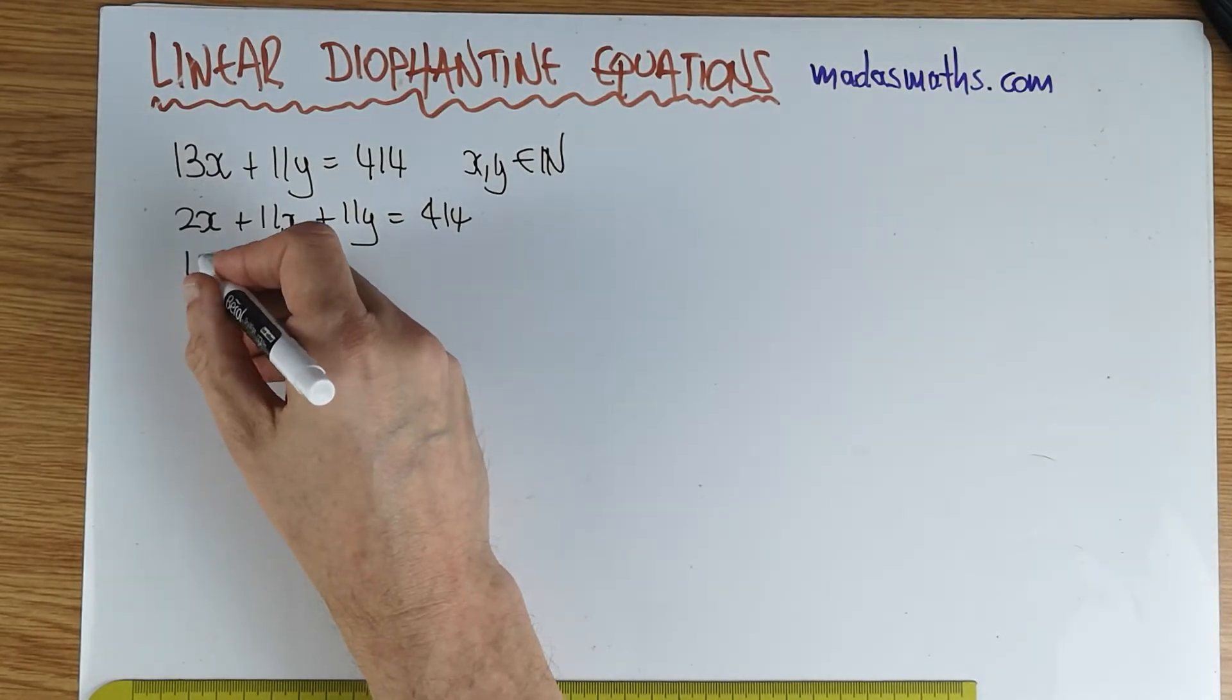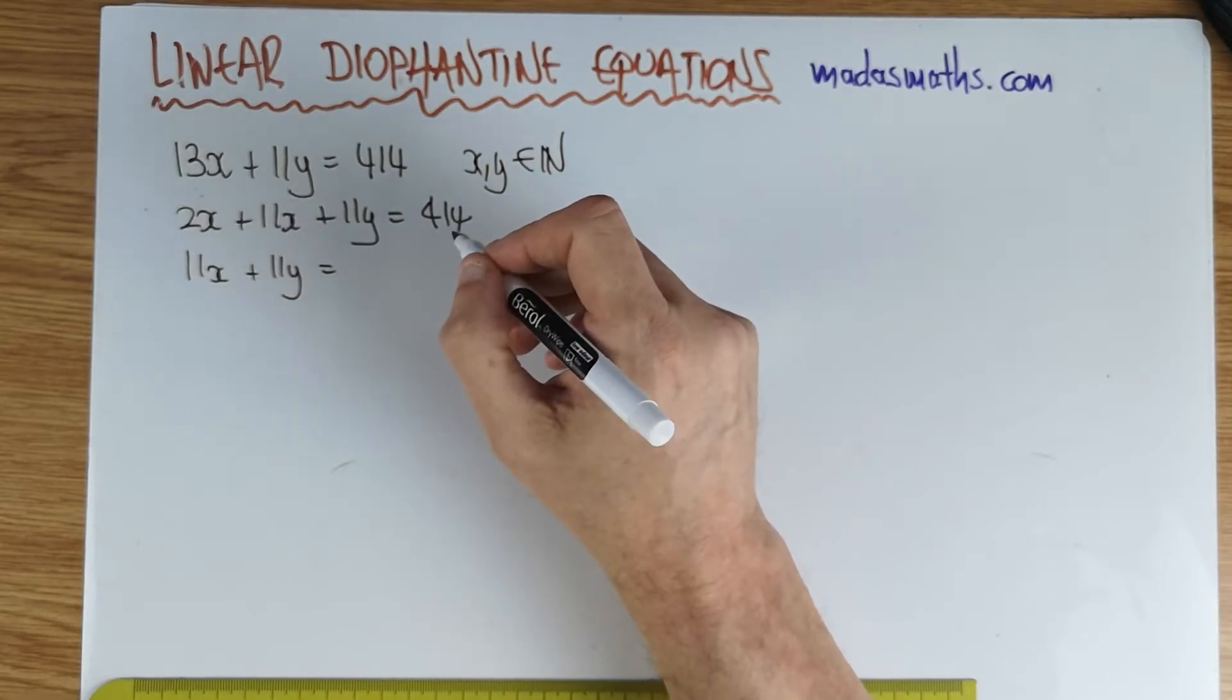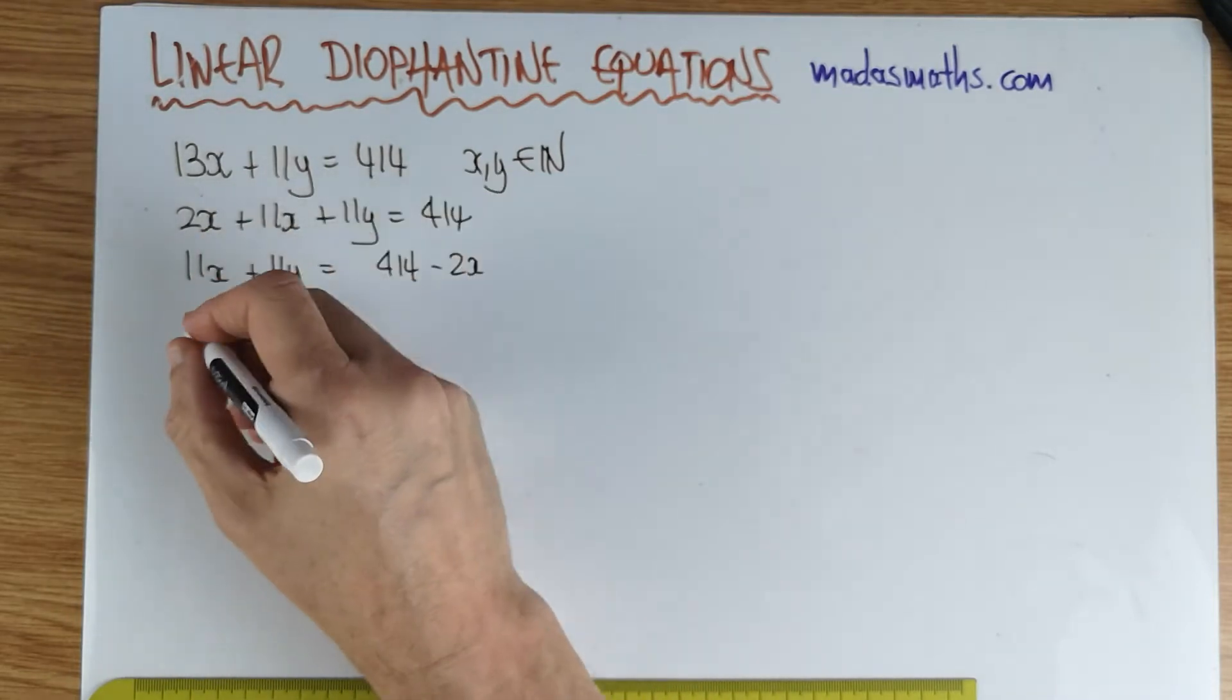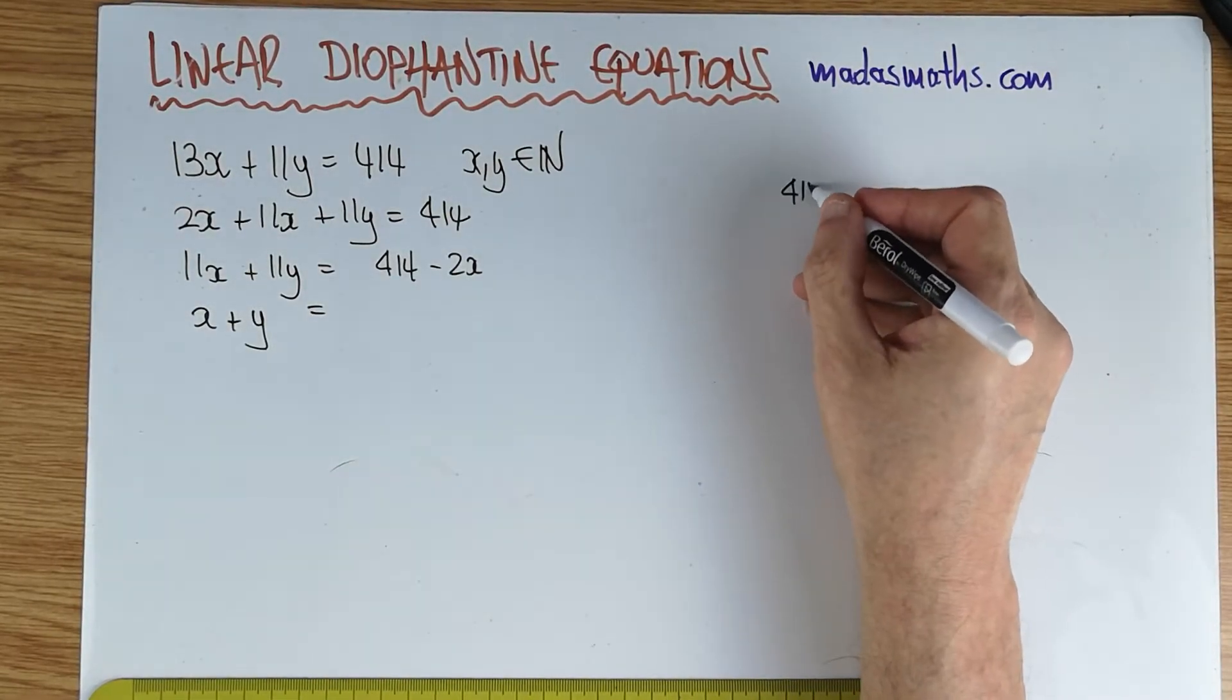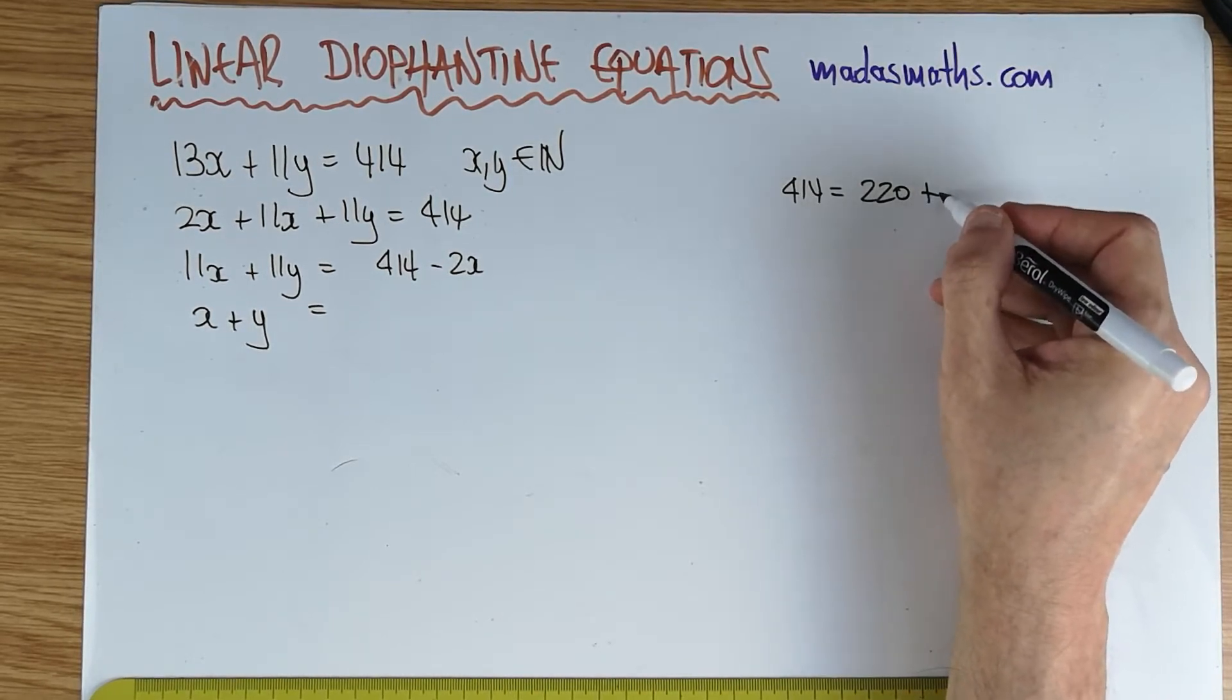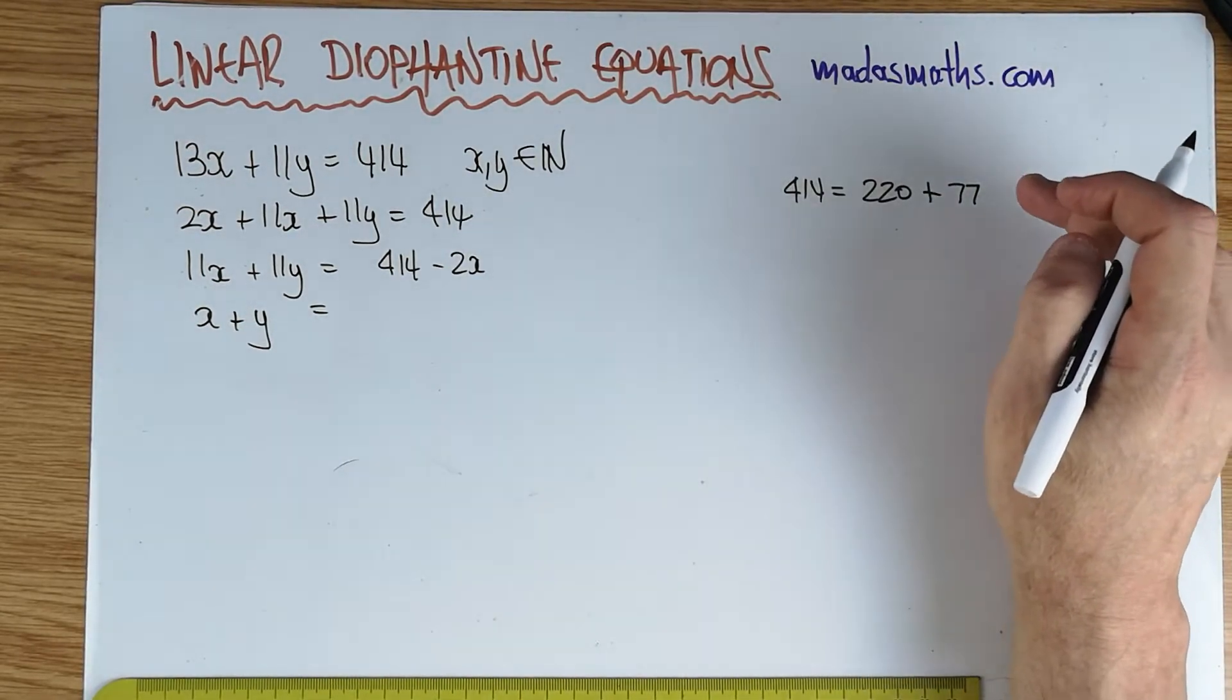So I wrote the 13x as 2x plus 11x. And the next thing we can do is to say, okay, 11x plus 11y is equal to perhaps we can write this as 414 minus 2x. And the reason we've done that is to divide by 11. So x plus y is equal to 414... I can write it as, I'm dividing by 11, so I'm going to write it as 220, that divides by 11, plus 77.